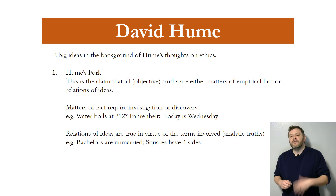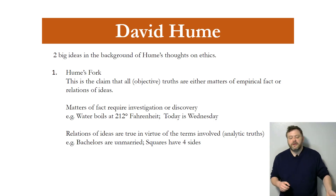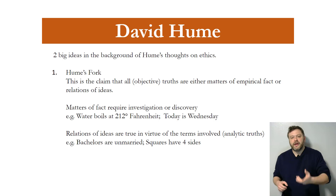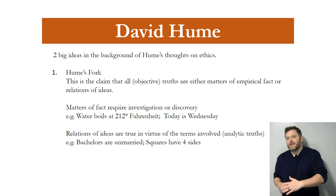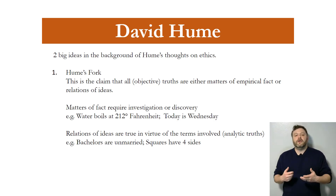Relations of ideas, on the other hand, are claims that are just basically true by definition. Bachelors are unmarried. Squares have four sides. Triangles have three interior angles. All of those things are true in virtue of the terms involved, so as long as you know what the words mean, you can figure out if those statements are true. It's not like we have to go interview a bunch of bachelors to see whether they're married.